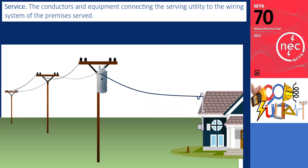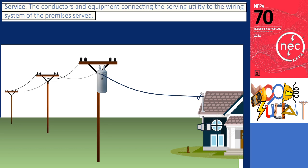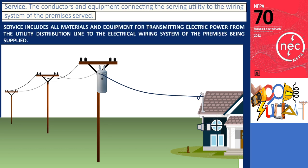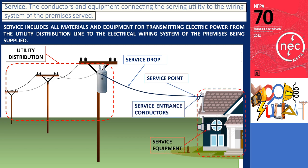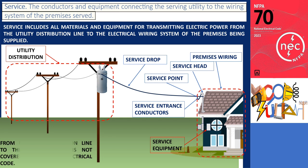Service: the conductors and equipment connecting the serving utility to the wiring system of the premises served. The term 'service' encompasses all the materials and equipment involved in the transmission of electric power from the utility distribution line to the electrical wiring system of the premises being supplied.